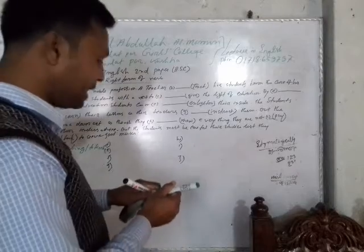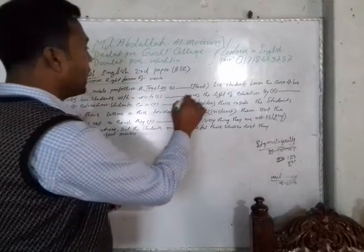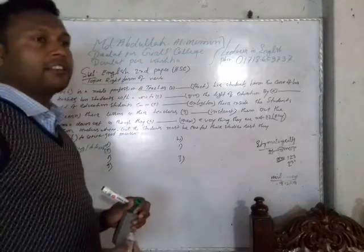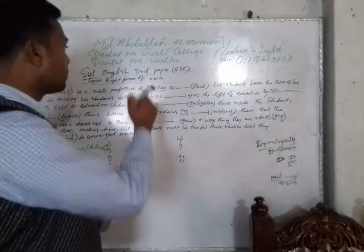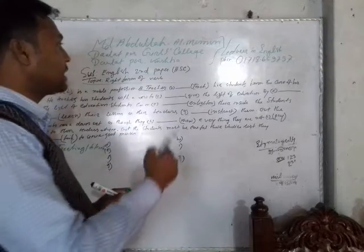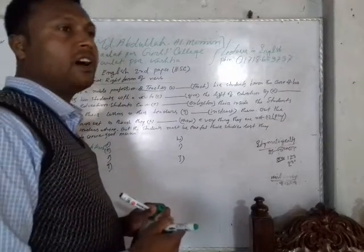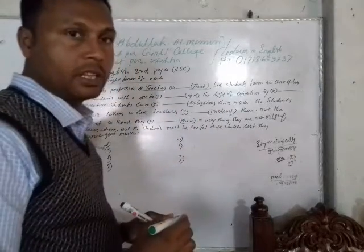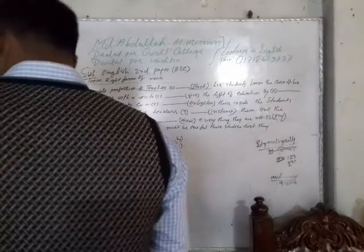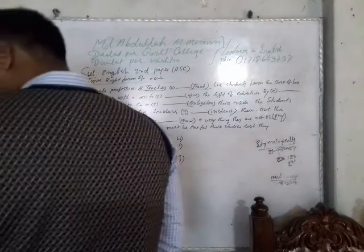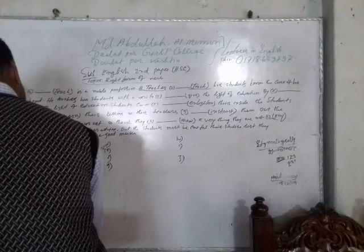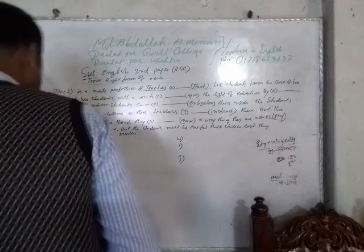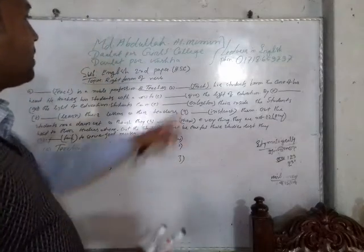A teacher is a third person singular number. According to the rule, in present indefinite tense with a third person singular subject, we add -s or -es with the verb. Here the verb is 'teach,' so the correct answer is 'teaches.' We can use the correct form of the verb: 'teaches.'